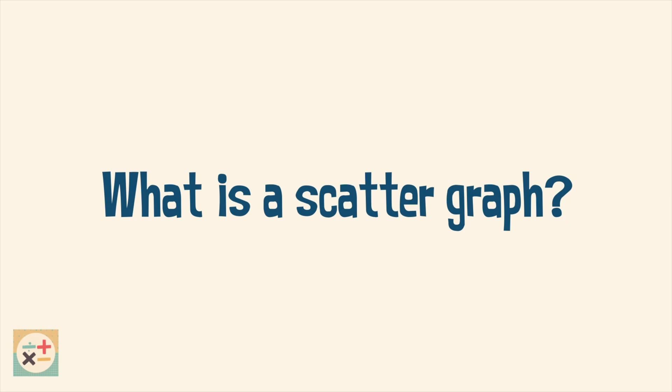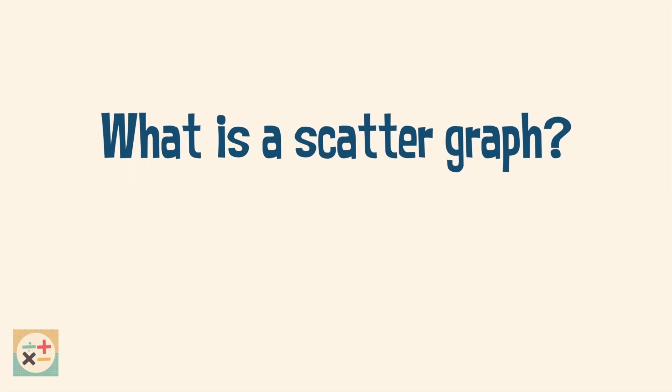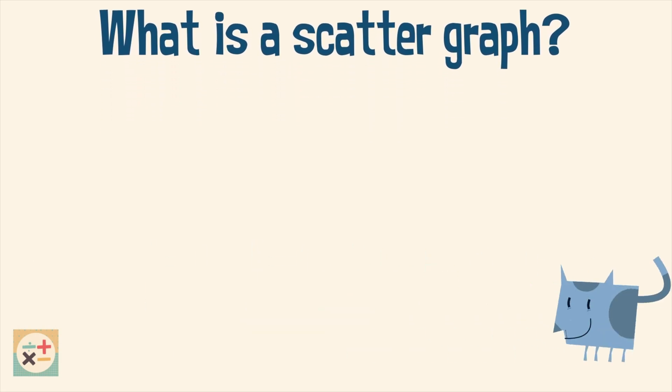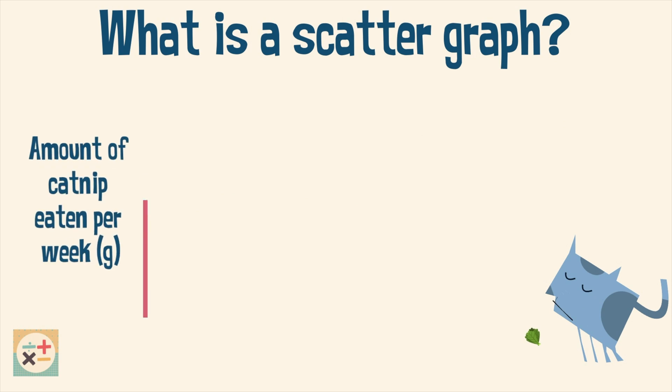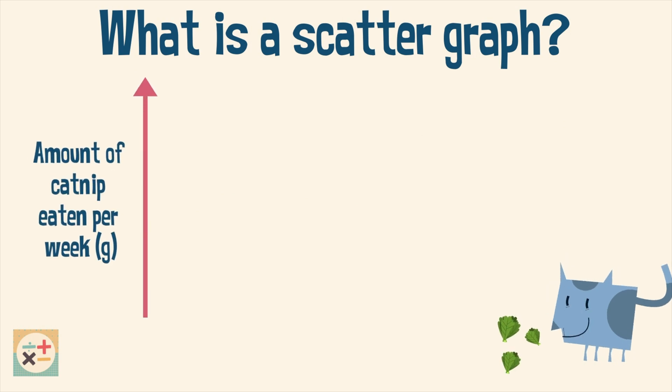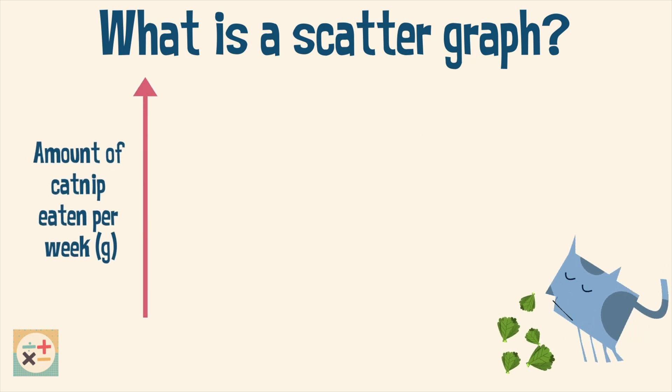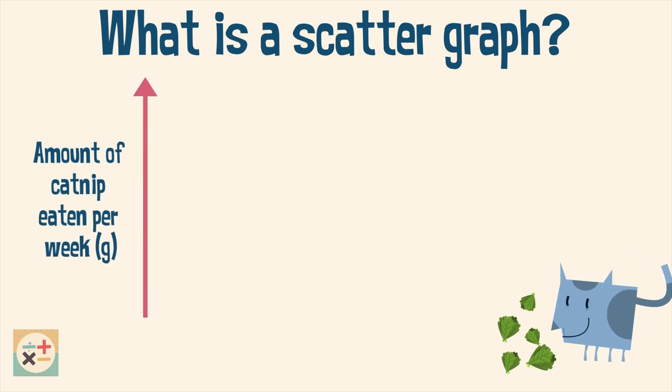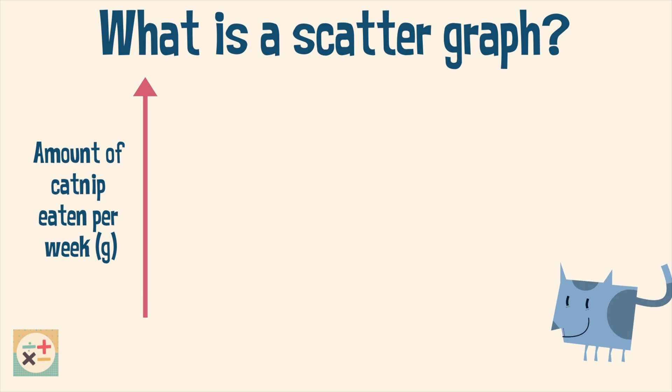A scatter graph or scatter plot can show you the relationship between two sets of data. For example, it can show you if there is a relationship between the amount of catnip a cat eats and the length of its whiskers.